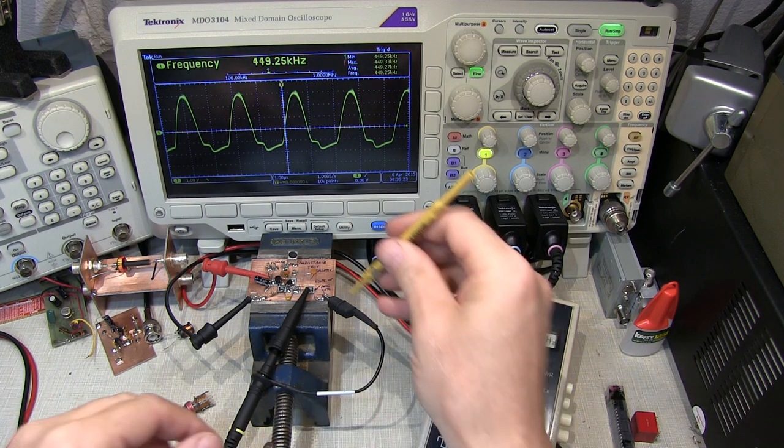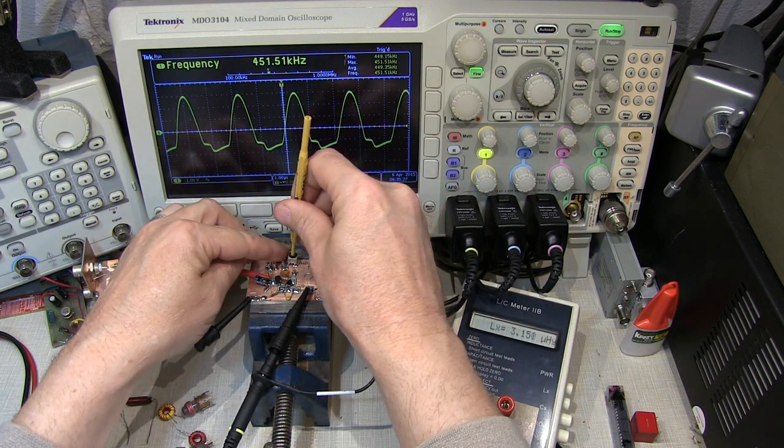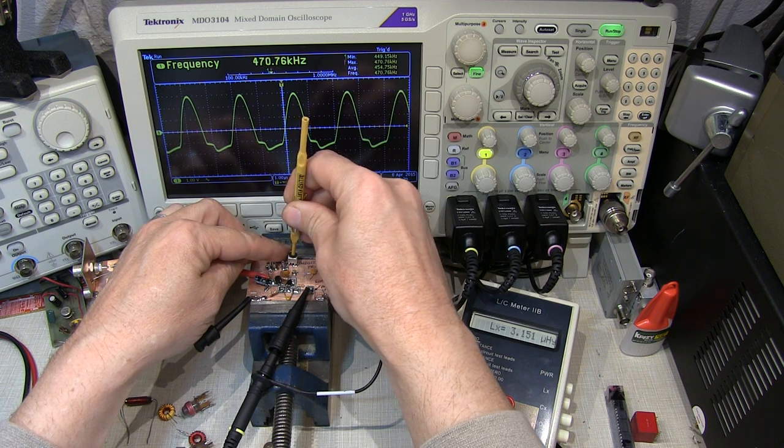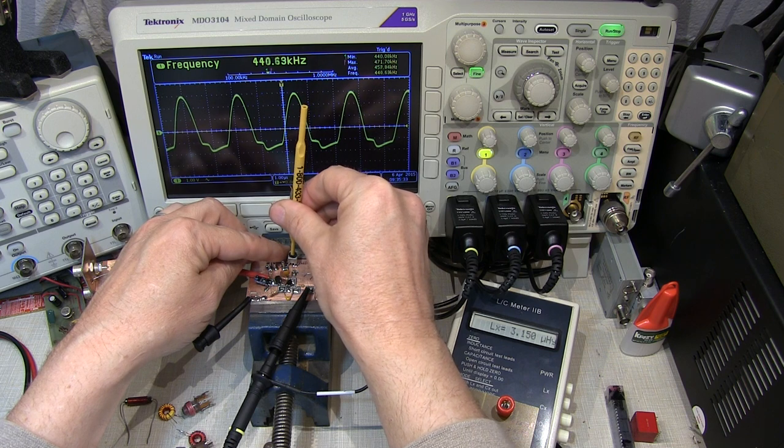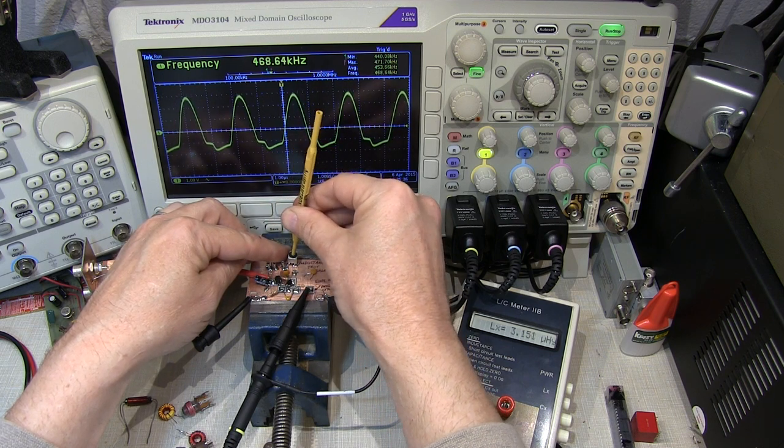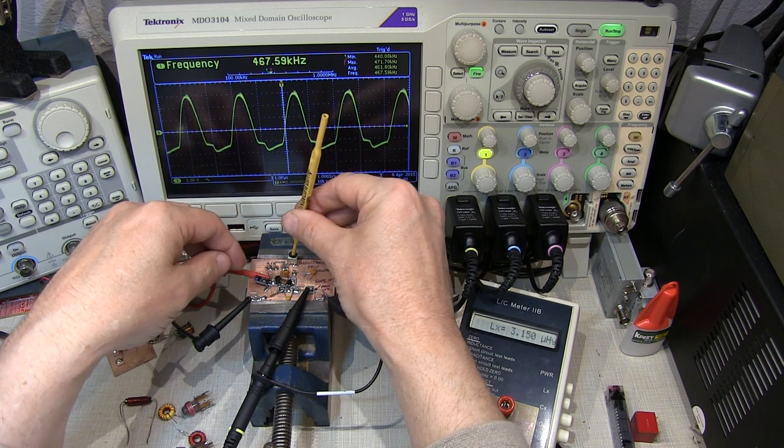In fact, if I take my little diddle stick here and I adjust the slug, you can actually see how I can change the frequency or the resonant frequency of this coil. This is what you're doing when you're aligning a radio. You're adjusting the resonant frequency of these tuned transformers, these tuned IF stages.